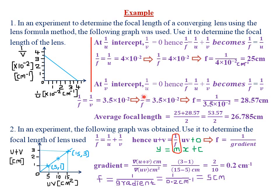Taking reciprocals on both sides, f = 1 over 3.5 × 10⁻². Computing this gives a focal length of 28.57 centimeters, to 2 significant figures. Because this graph allows us to find focal length using both the 1/u axis and the 1/v axis, we simply find the average focal length from the two values.